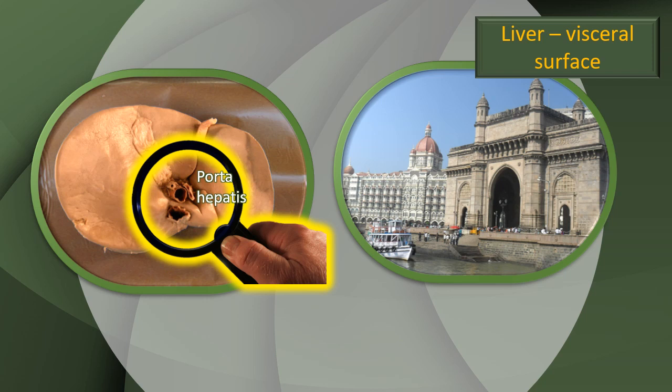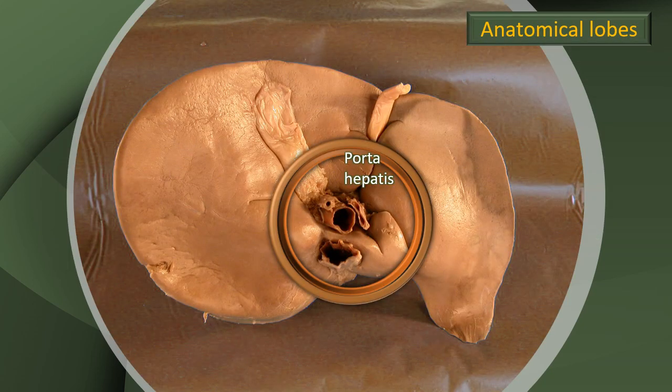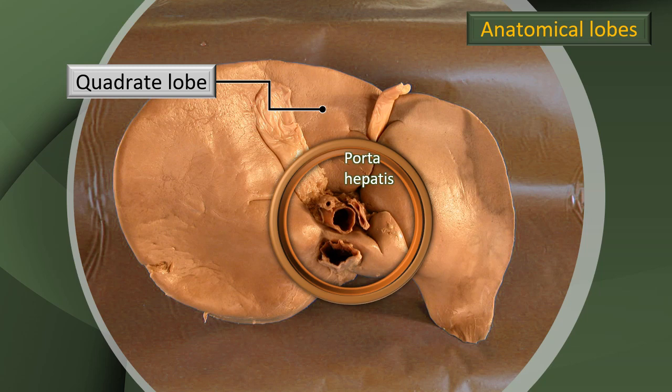Highlighted here on the inferior surface is that entry point called the porta hepatis. It is the only entry point on the inferior surface to go into the parenchyma of the liver; therefore it's an important surgical gateway. As we examine the porta hepatis, we will identify all the structures within as well as in the vicinity, because that is going to be the anchor point from where the divisions into sectors and segments of the liver will take place.